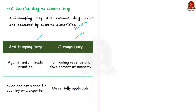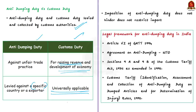The difference between anti-dumping duty and customs duty: anti-dumping duties are levied against a specific country or a specific exporter, whereas customs duties are general and universally applicable to all importers regardless of country of origin. Importantly, imposing anti-dumping measures will not restrict imports from any country in any way, so customers' access to imported goods is not hindered.